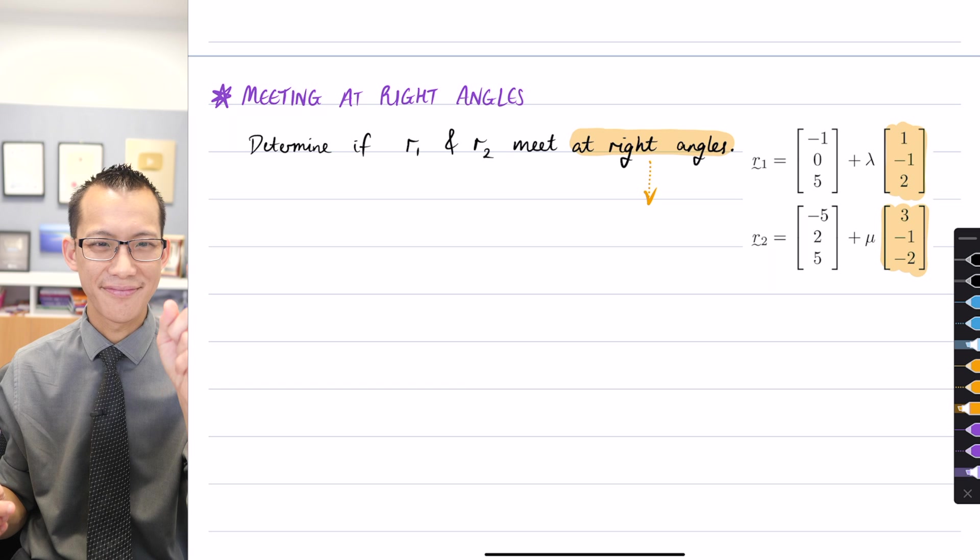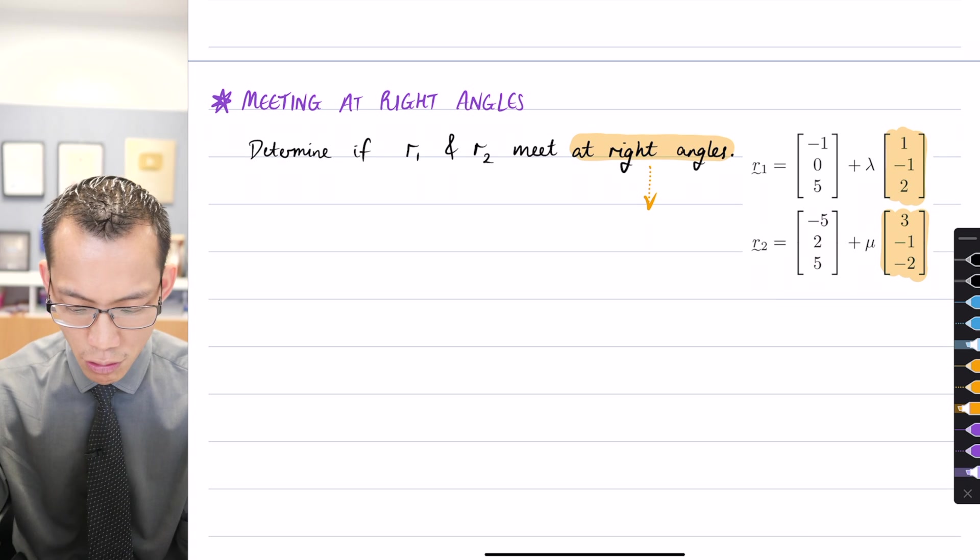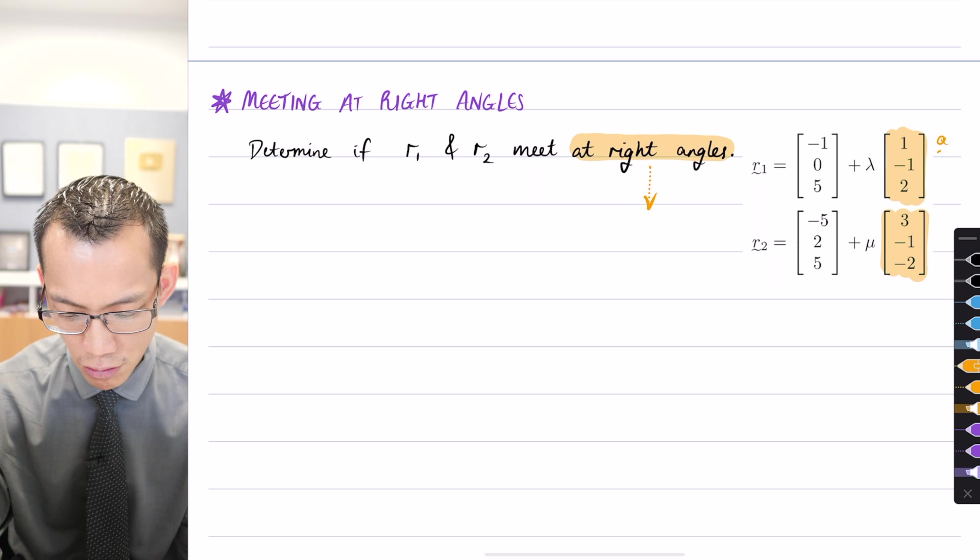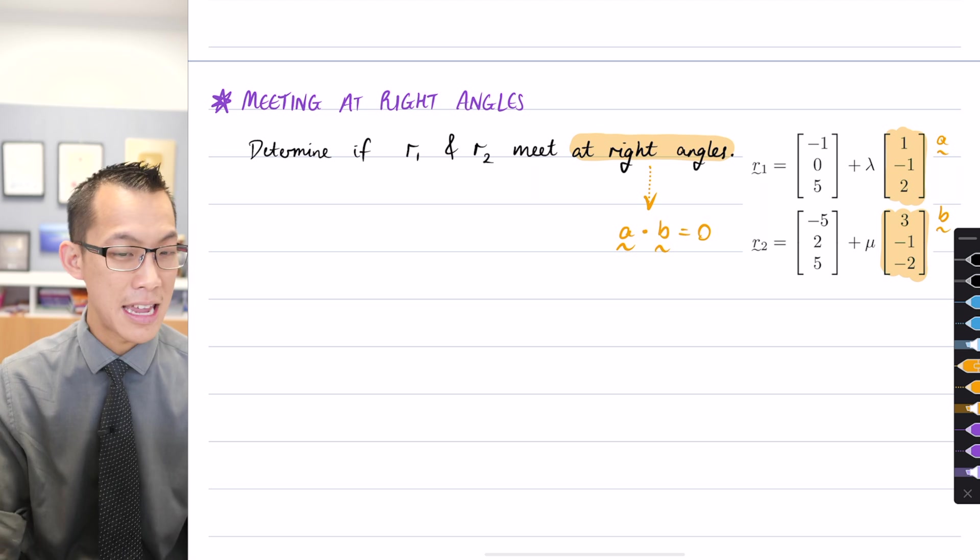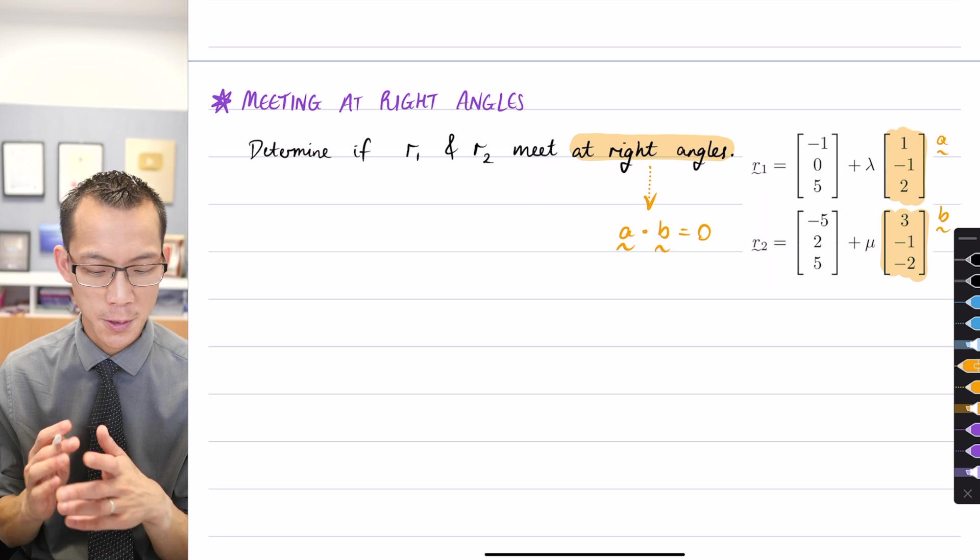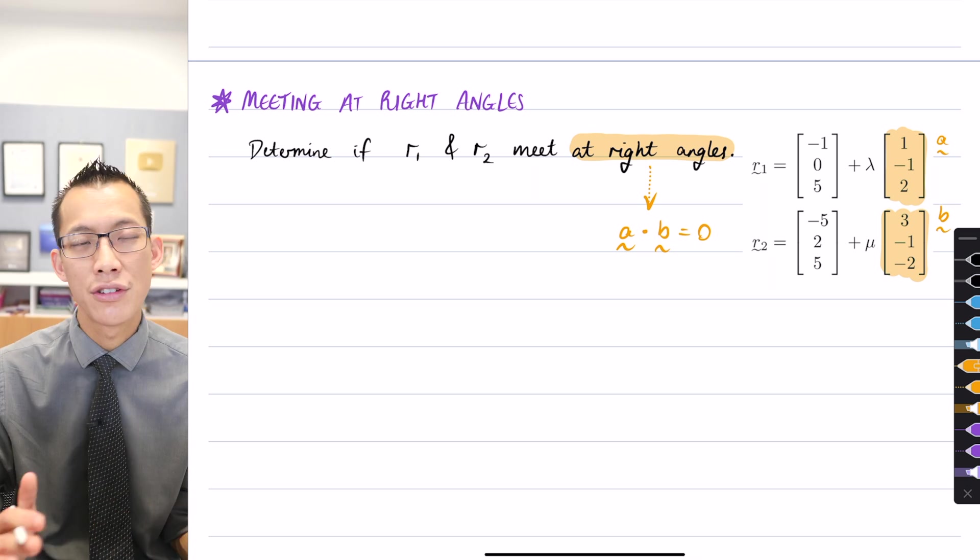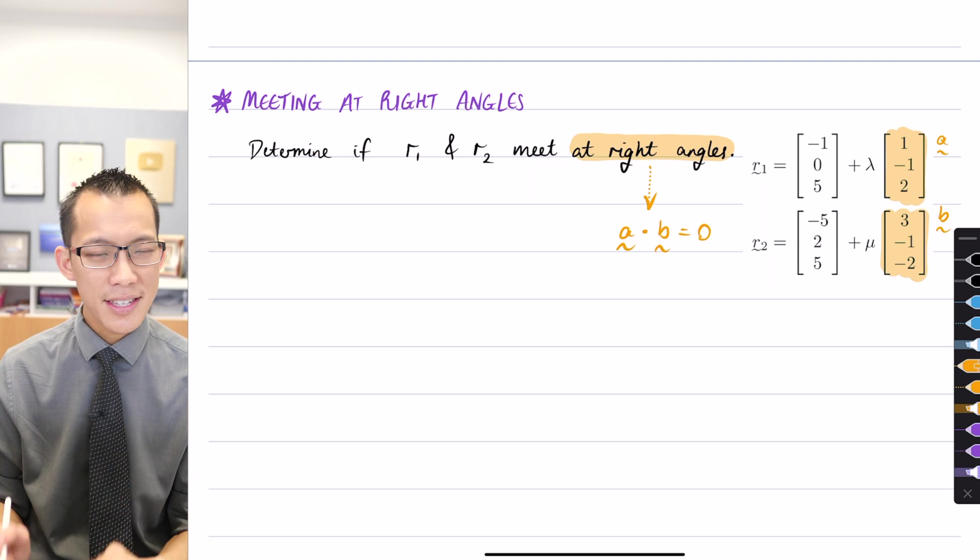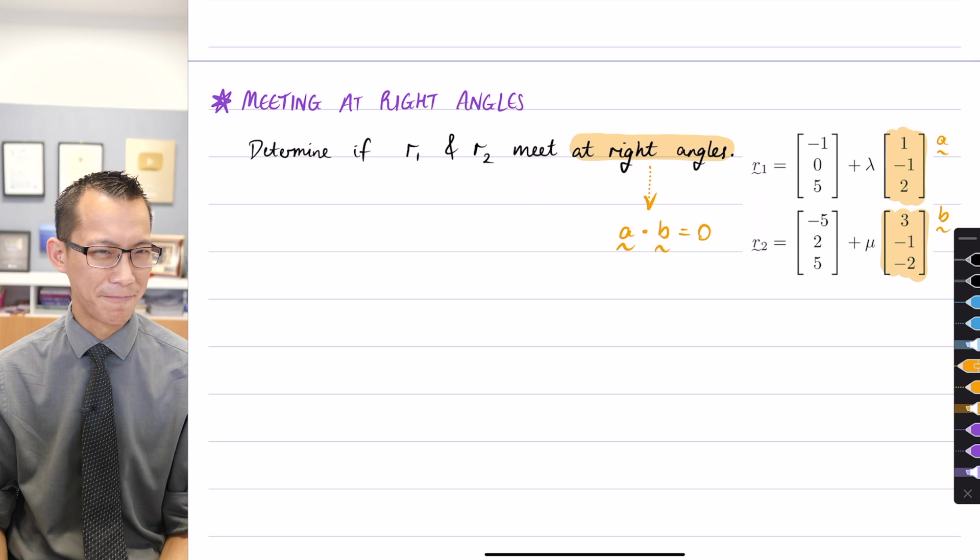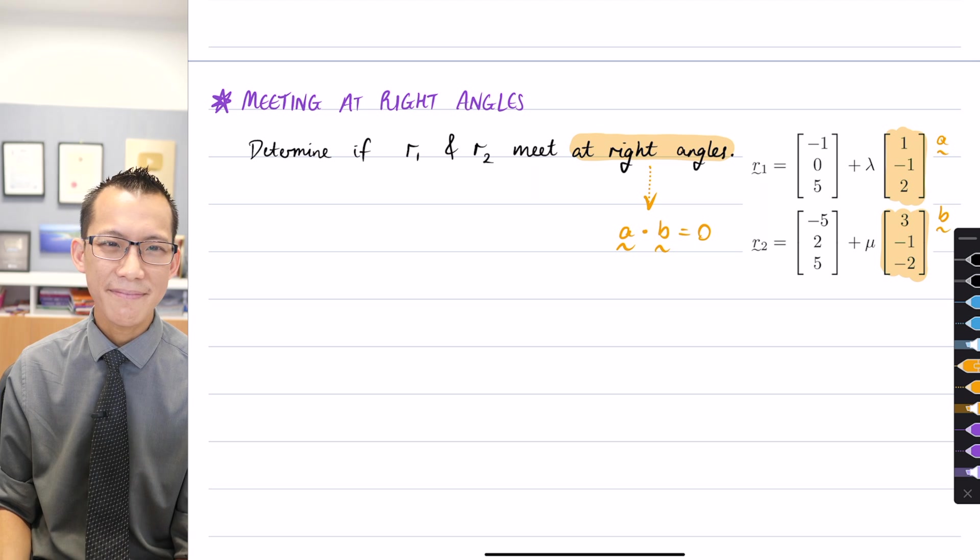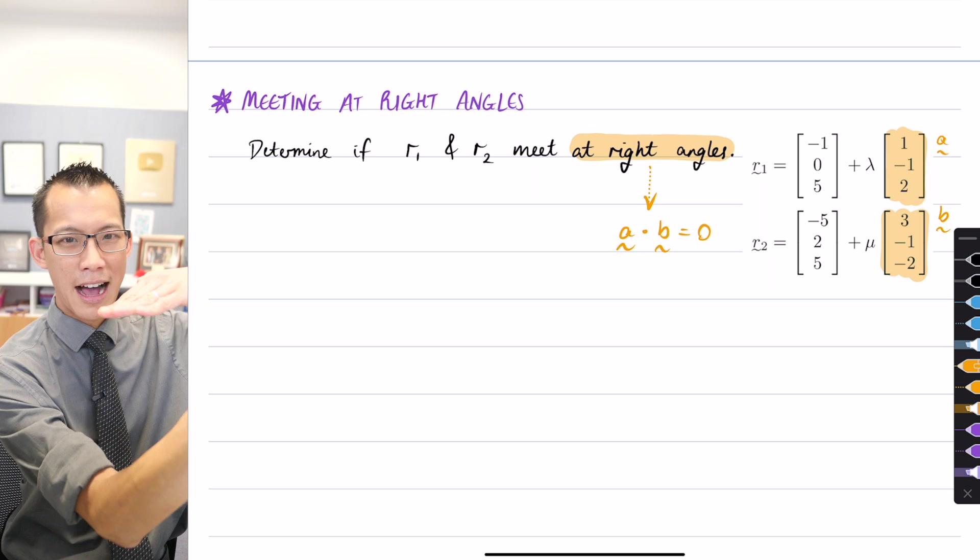Yeah, it should be zero, very good. I'm going to call this vector a and this vector b. So what we want is a dot b should equal zero if it is true that they're at right angles. Now that is totally sufficient in two dimensions, but in three dimensions this isn't enough. I don't have enough information to answer the question appropriately. Can anyone tell me what's missing?